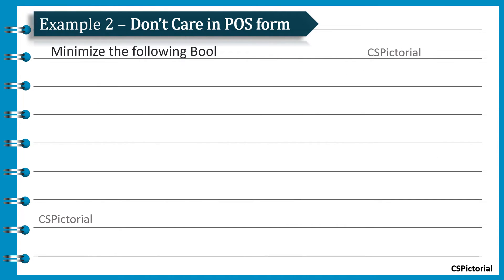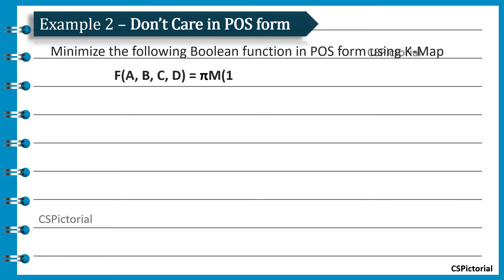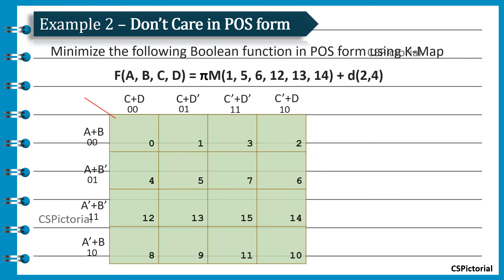As mentioned in the question itself, this example is a POS form boolean function specified as Φ capital M, and it involves don't care cells. The given boolean function specifies the max terms and the don't cares denoted as D terms. Since it is POS form, first fill up zeros in the blocks of the KMAP respective to the max terms and place x in the blocks respective to don't care. Now, try making larger groups and include don't care cells wherever possible.